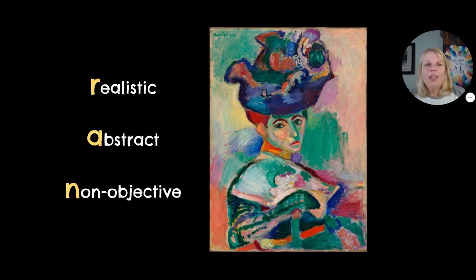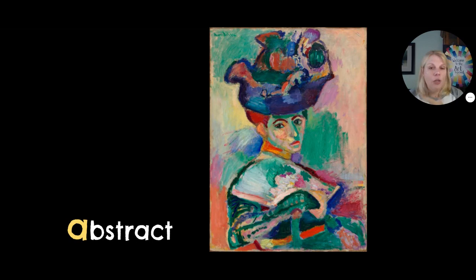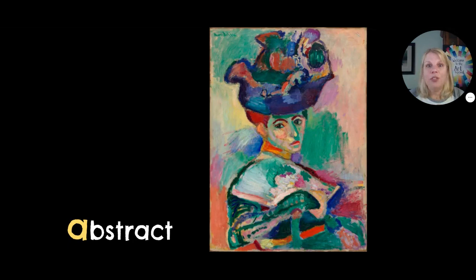Realistic, abstract, non-objective — R, A, N — which is it? Yes, that's abstract. No one has green skin. You can tell it's a woman, her clothes could be realistic possibly, but the color of her face makes that abstract. Another one of my favorite artists, Henri Matisse — love him.